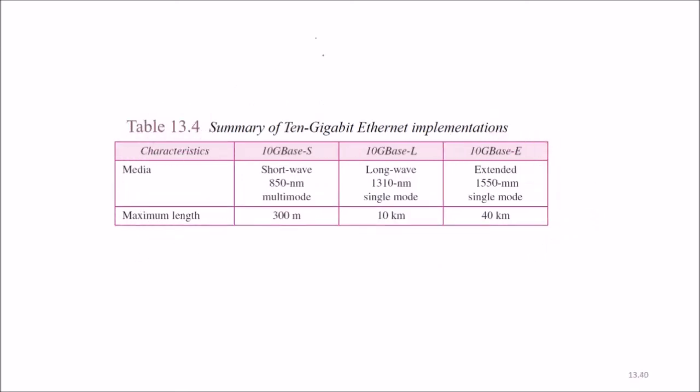Thinking the 10 gigabit Ethernet implementation, which is the present one. There are three different characteristics or categories: 10GBaseS, 10GBaseL, 10GBaseE. This is short wave multi-mode, this is long wave single mode, this is extended single mode. The maximum length goes up to 10 kilometers for 10GBaseL, and for others it goes up to 40 kilometers. This is very good improvement.